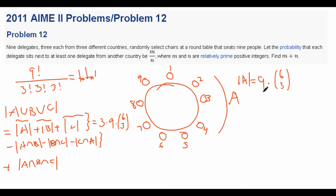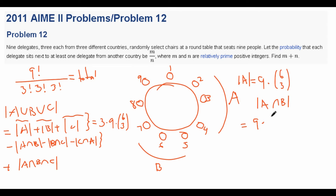For the size of A∩B — three consecutive delegates from A and three consecutive from B both present — we again place A in nine positions. For B, the three consecutive B seats can start at four possible positions relative to A (e.g., seats 5-6-7, 6-7-8, 7-8-9, or 8-9-1), so there are four choices. The remaining C delegates are forced into the leftover seats. So |A∩B| = 9 × 4. By symmetry, |B∩C| = |C∩A| = 9 × 4, so the pairwise intersection sum is 3 × 9 × 4.